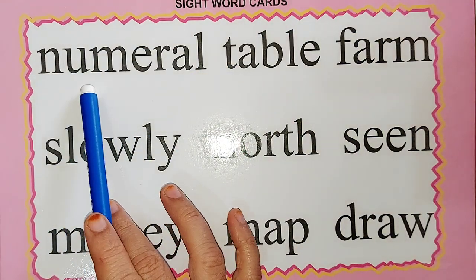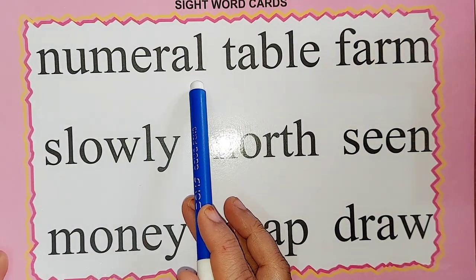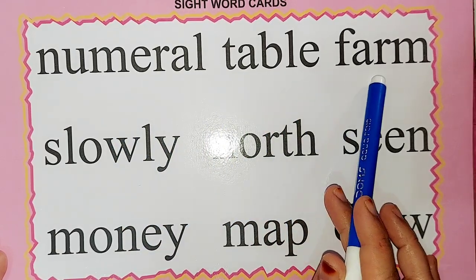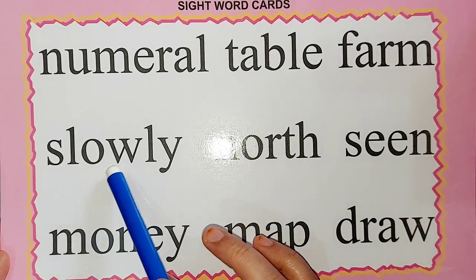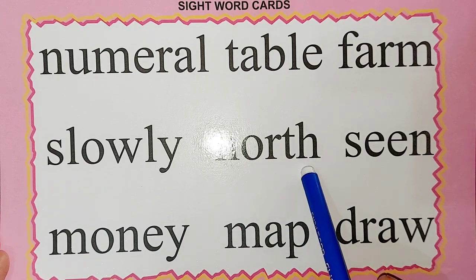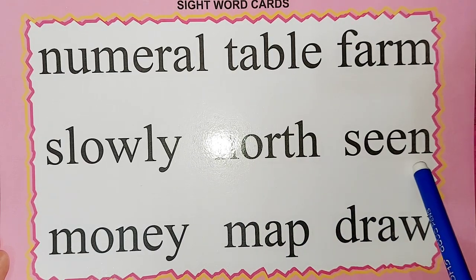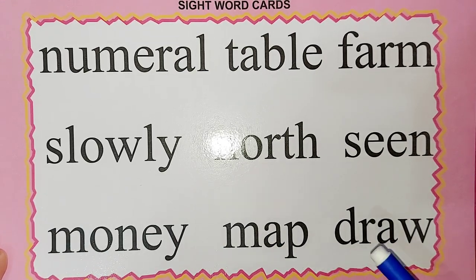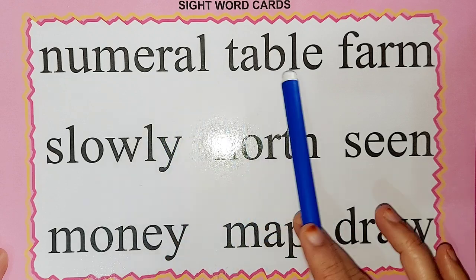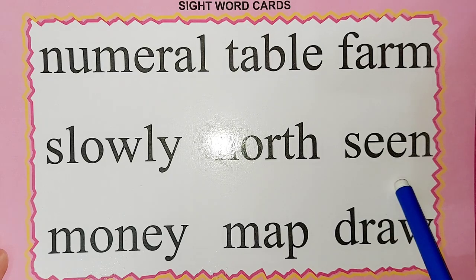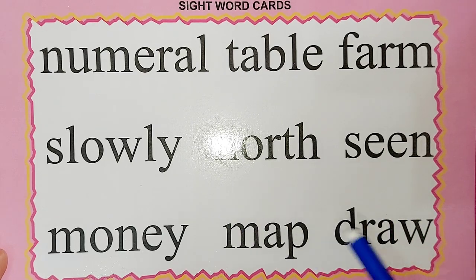The next word is N-U-M-E-R-A-L: numeral. T-A-B-L-E: table. F-A-R-M: form. S-L-O-W-L-Y: slowly. N-O-R-T-H: north. S-E-E-N-C-E: scene. M-O-N-E-Y: money. M-A-P: map. D-R-A-W: draw. Once again: numeral, table, form, slowly, north, scene, money, map, draw.